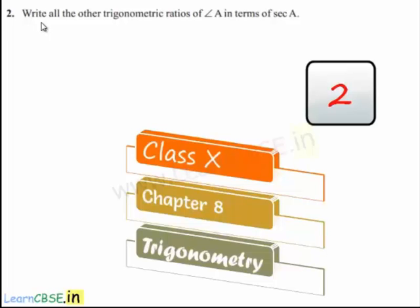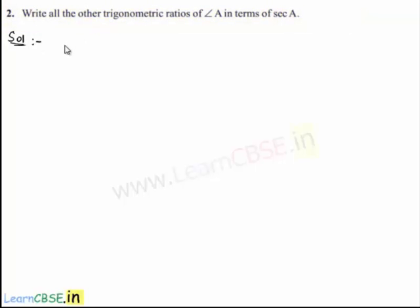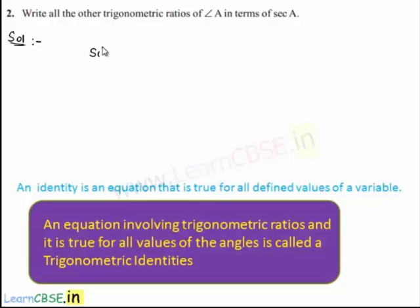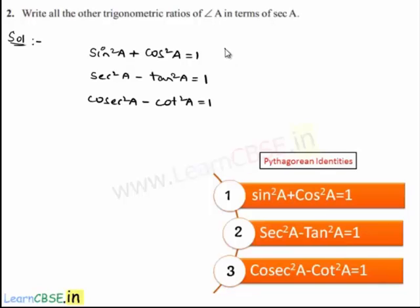Moving on to the second sum: write all the other trigonometric ratios of a in terms of secant a. He asked us to express sin, cos, tan, cot, secant, and cosecant in terms of sec a. To express one trigonometric ratio in terms of another, we shall use: sin²a + cos²a = 1; sec²a - tan²a = 1; and cosec²a - cot²a = 1.